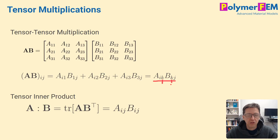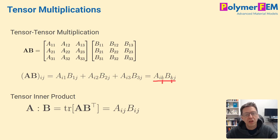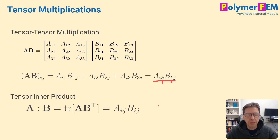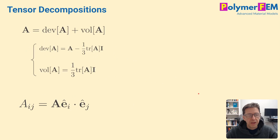Another useful concept for finite element simulations and materials is the inner product of tensors, written with a colon. It produces a scalar given by the sum of the element-wise products of the tensor components — essentially the sum of all corresponding terms.